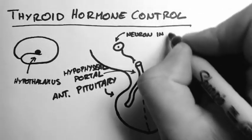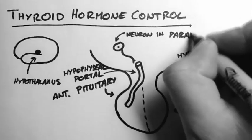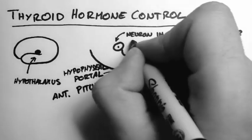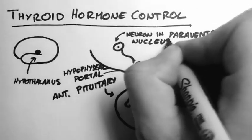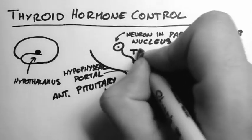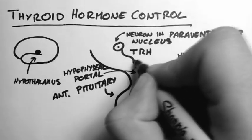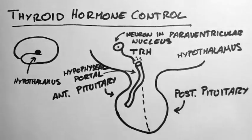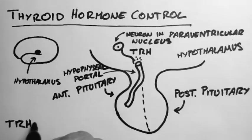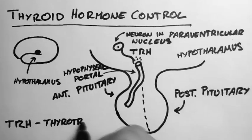Now the way this works is that a neuron in the paraventricular nucleus releases a hormone we call TRH, and this releases TRH into the portal vein. TRH stands for Thyrotropin Releasing Hormone.